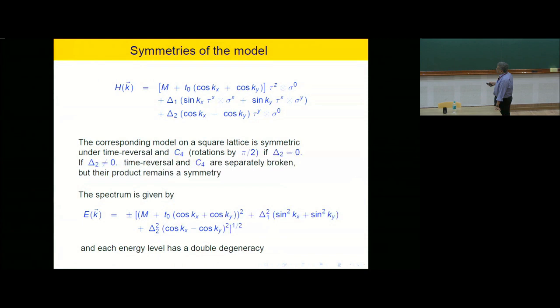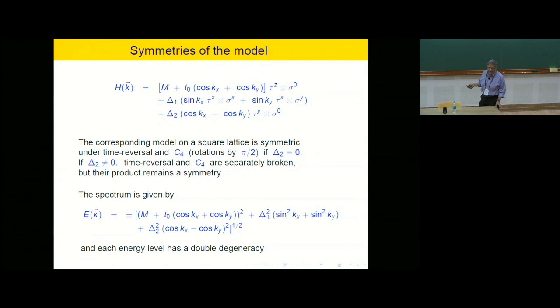A word about the symmetries of the model. If you don't have delta_2 — just the first two lines — this is symmetric under rotations by pi/2 on a square lattice, and also time reversal. The last term clearly breaks rotation by pi/2, because cos kx and cos ky have opposite signs — if you rotate by pi/2, kx and ky get interchanged. So the last term breaks C4. It also breaks time reversal, because under time reversal you do complex conjugation and multiply by sigma_y. But it turns out this term maintains the product of C4 times time reversal, so that combined operator continues to be a symmetry.